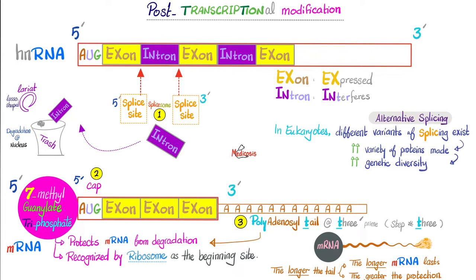Step one: splice the bad guys out. The introns are the bad guys because they interfere with the process of translation. But the exons are the good guys — exons are expressed into meaningful amino acids, which become meaningful, useful proteins. Who is going to splice it out? The spliceosome — the body that splices. We cut at a splice site near the 5' end and a splice site closer to the 3' end, so that we can excise and remove the intron and throw it into the trash. The nucleus will degrade that intron, because we're still in the nucleus.